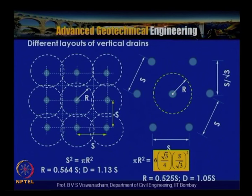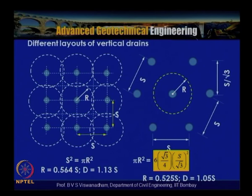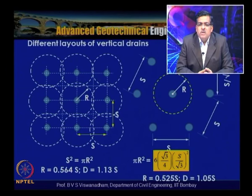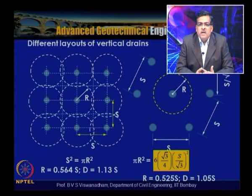The different layouts of vertical drains include square, triangular, and rectangular grids. In a square layout, drains are placed in the center and each drain has an influence area. If the spacing is larger, the efficiency of the vertical drains decreases. Drain technology has evolved from sand drains to wick drains to modern prefabricated vertical drains (PVDs), which are very popular. Their installation is faster and minimum spacing of 1 to 1.5 meters is achievable.